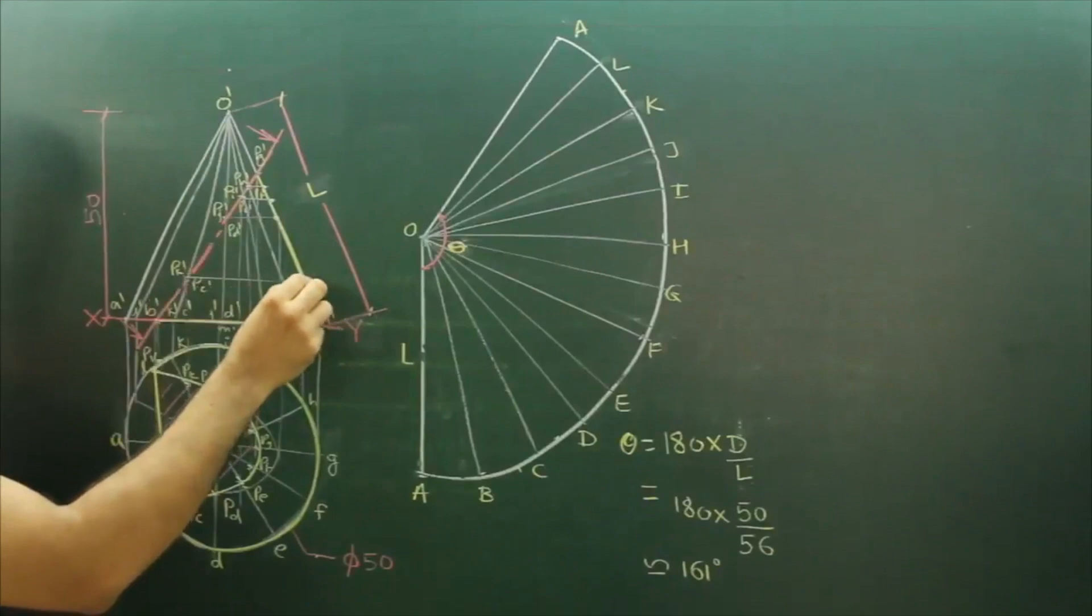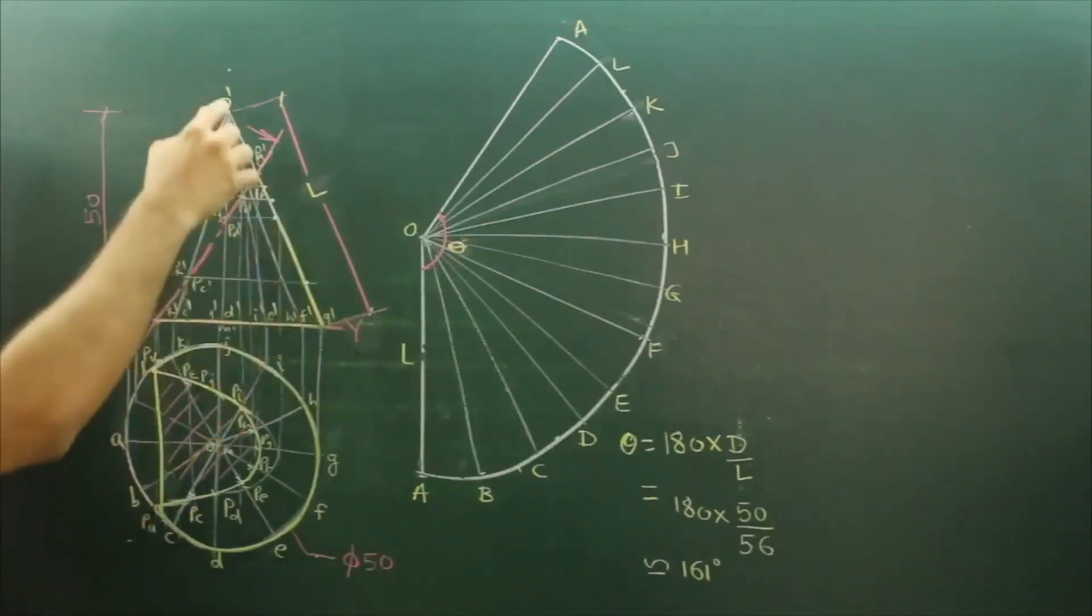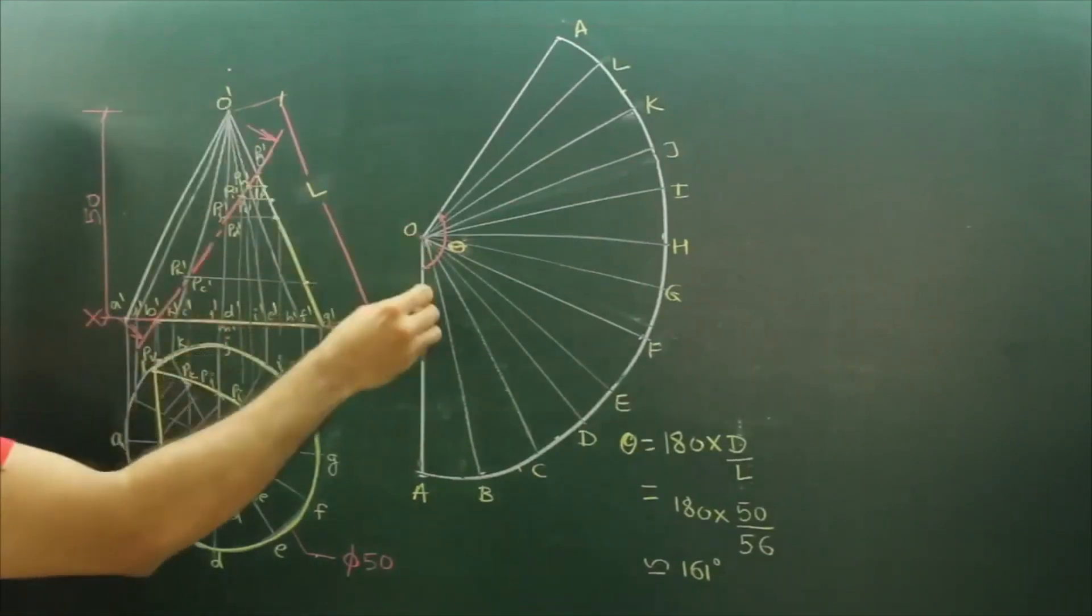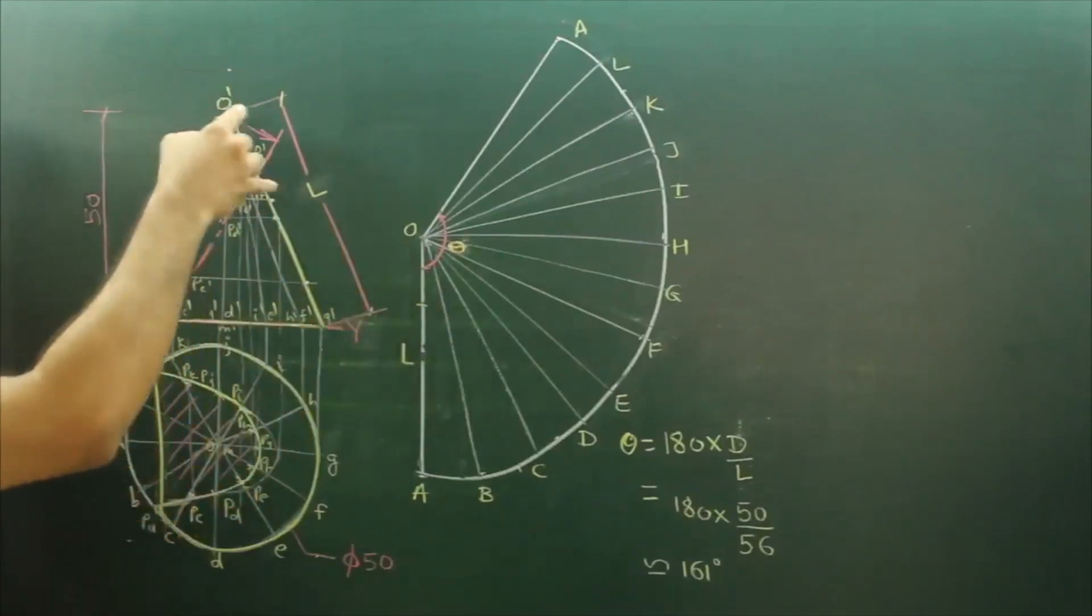PE dash, PI dash - all those points you project on the extreme edge. Take this distance, cut here. Take this distance, cut here. Mark all these distances on true length first.